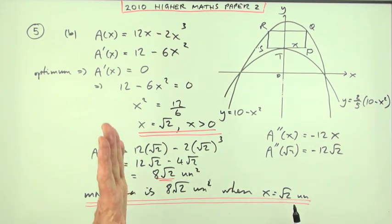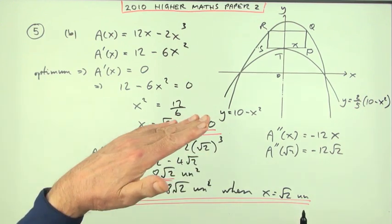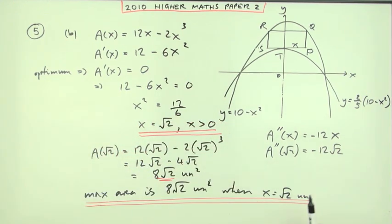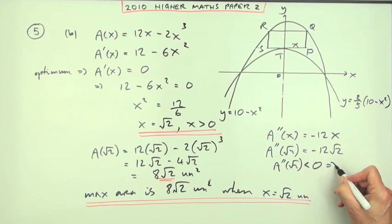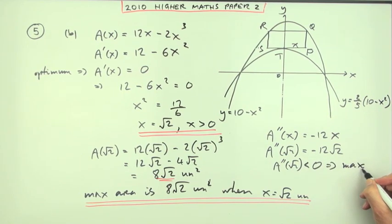And a negative means, maybe we should put the working in, so that means that that is less than 0, which means that you've got a maximum. That would do instead of a nature table.